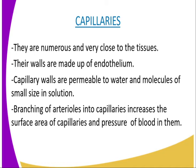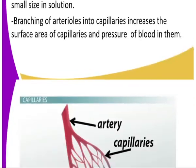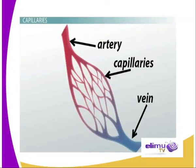Tissue fluid is a watery liquid that is similar to plasma in composition, except that it lacks proteins, red blood cells, and some white blood cells. Phagocytic white blood cells are able to squeeze in between the cells of the capillary wall into the tissue fluid. The tissue fluid bathes cells of the tissues and forms a medium for exchange of materials between blood and the cells. From the tissue fluid, the cells extract substances, which include glucose, oxygen, amino acids, vitamins, hormones, and some mineral ions. Into the tissue fluid, the cells release metabolic waste, which includes carbon dioxide and urea.